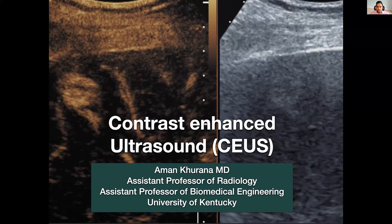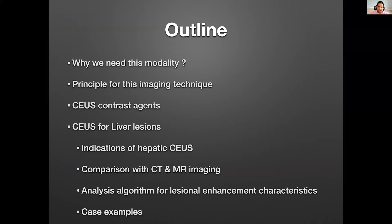Here you have a liver lesion which is barely visible on the grayscale imaging, but once we give microbubbles, you can see an avidly enhancing liver lesion. The outline of this talk is: why do we need this imaging modality, what's the principle of this imaging technique, what are the different contrast agents available, and specifically talking about liver lesions today — indications, comparing them with CT and MR imaging, the analysis algorithm, and case examples both from the literature and from our university.